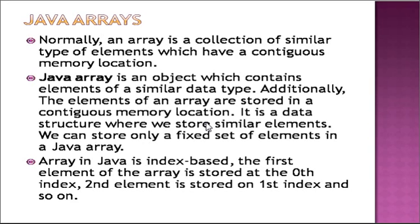Arrays have indexes used to store data elements. The first data element in an array is stored at index 0, and the last data element is stored at index n-1. For example, if you have 10 data elements, the indexing ranges from 0 to 9 (that is, n-1 = 10-1 = 9). The second element is stored at index 1, and so on.